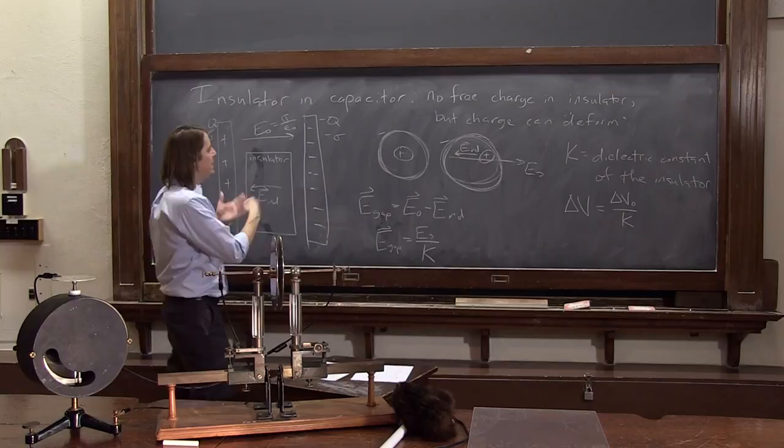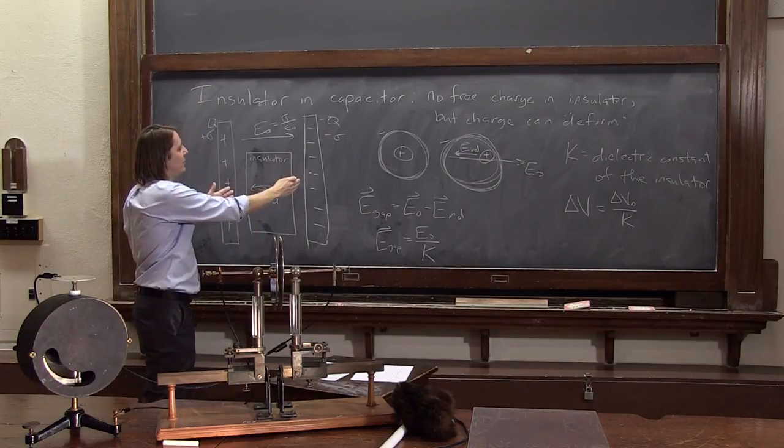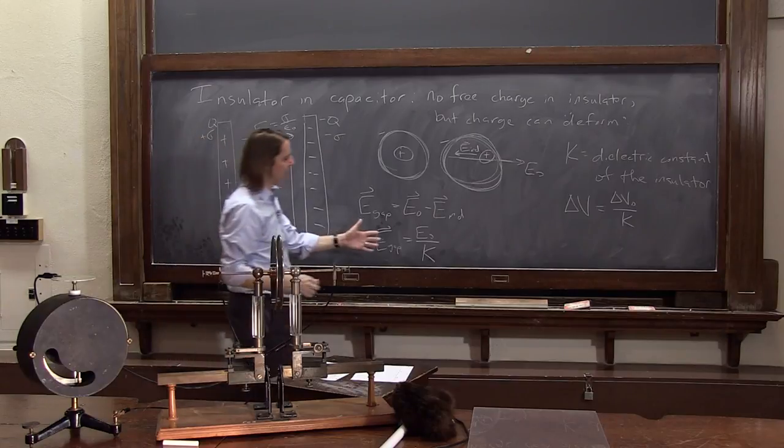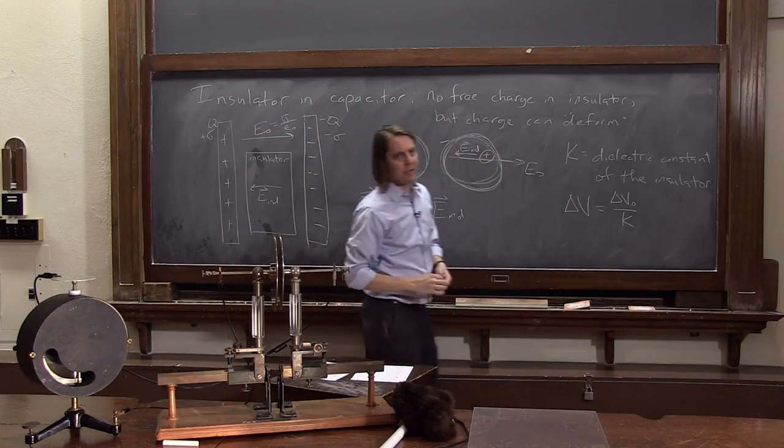Because V equals ED, because the separation remains the same, so the electric field and the voltage are proportional to each other. So if the electric field drops by K, the delta V drops by K.